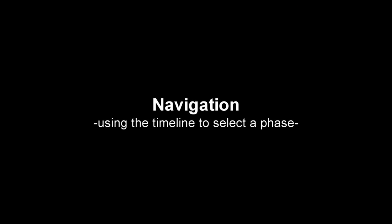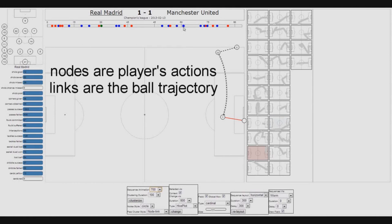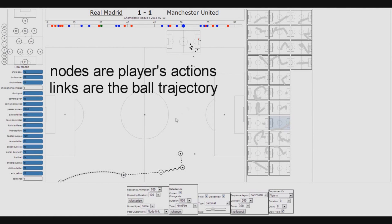The analyst navigates to a phase of interest on the timeline. By hovering a dot, the corresponding phase pops up in a thumbnail view. By clicking the dot, the events constituting the phase are animated in chronological order on the focus view. Each node represents a player's action, dotted links are passes, and squiggly lines occur when a player moves with the ball. The phase ends with an attempt to score a goal. Note that the same interaction is available using the small multiples view.